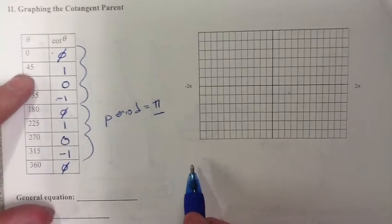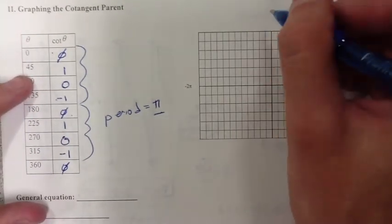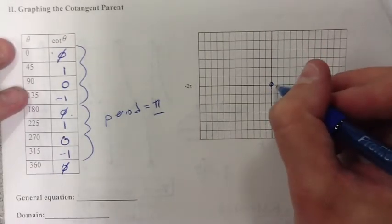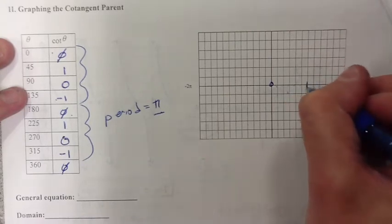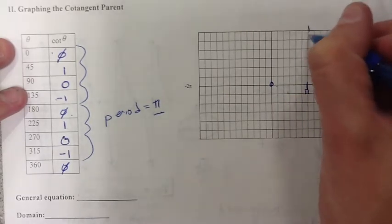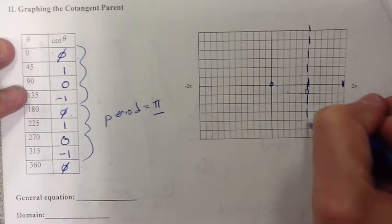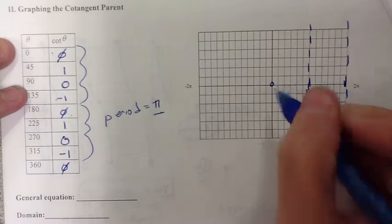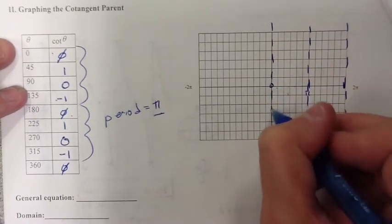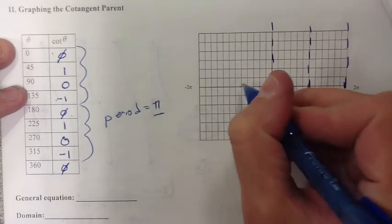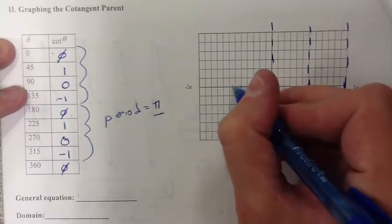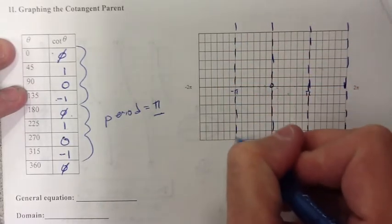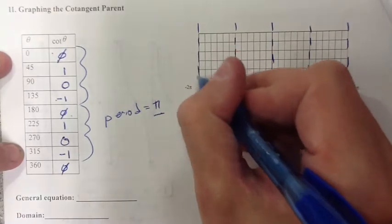To get cotangent, same thing - we graph the asymptotes. But this time, the asymptotes are at 0 and π, and the next one will be at 2π. We'll go the opposite way - negative π and negative 2π. Don't forget the 0 asymptote, and we're going to draw our asymptotes.